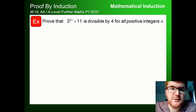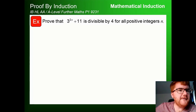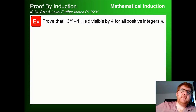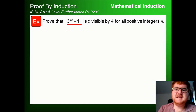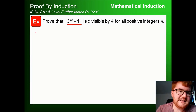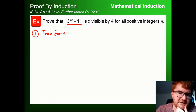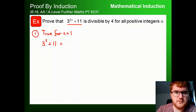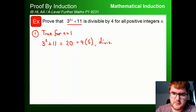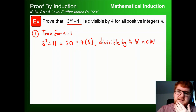On to part two — divisibility questions. These are also very typical on both the IB HL AA course and the A-level Further Maths Paper 1. We're going to prove that 3^(2n)+11 is divisible by 4 for all positive integers n. We approach this the same way as summation, starting by establishing it's true for n=1.